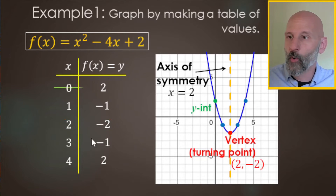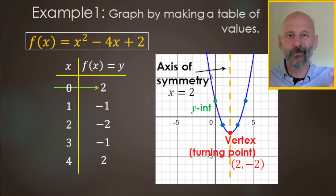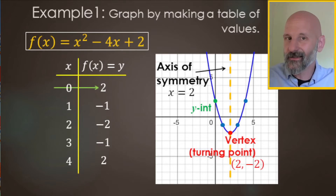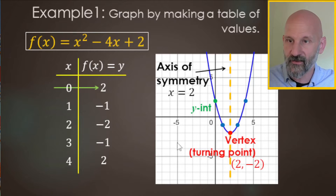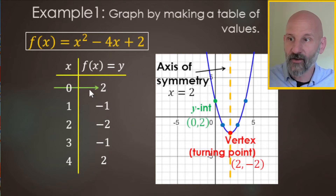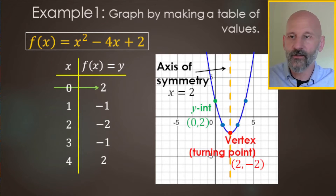The y-intercept is always where x equals zero — whether you're on a line, square root, or parabola. On the y-axis, x is zero. So the y-intercept ordered pair for this graph is (0, 2).